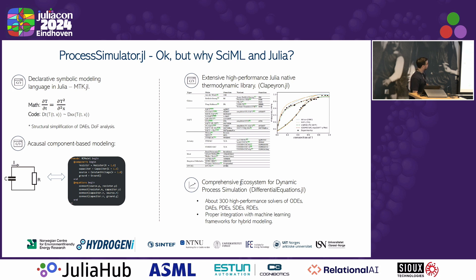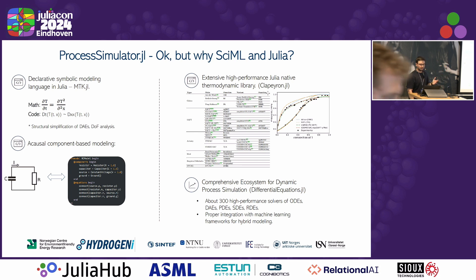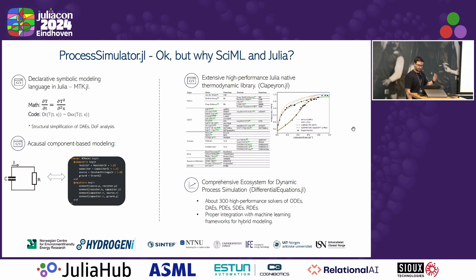Why would we choose Julia to build an open-source chemical process simulator? We have the nice declarative symbolic modeling language MTK.jl, which makes it easy to go from math to symbolic representation and then to numeric implementation of chemical engineering models. We have acausal component-based modeling where we can compose process unit operations into a flowsheet. And critically, Clapeyron.jl has been doing a great job implementing state-of-the-art equations of state for chemical engineering. For dynamic simulation, we can count on DifferentialEquations.jl, which has many high-performance implementations of ODE and DAE solvers.